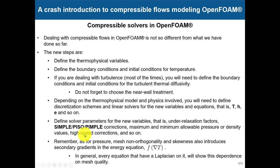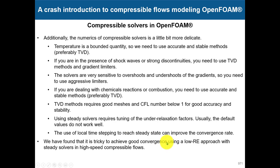This is particularly true when you have high-speed flows and shock waves. Also remember that in all these equations we have a Laplacian term, which is very sensitive to mesh quality. In the energy equation you have a large Laplacian term, and it is very sensitive to mesh quality. For high-speed compressible solvers, it is strongly recommended to have good quality meshes — avoid large non-orthogonality.